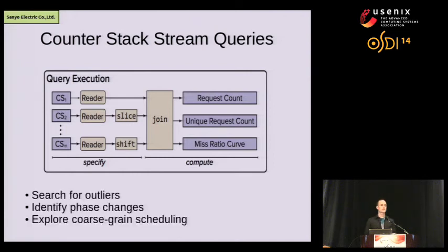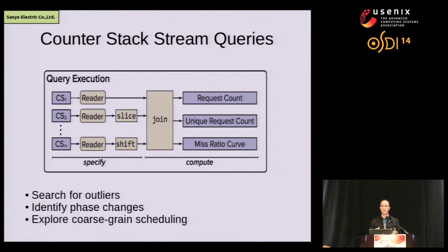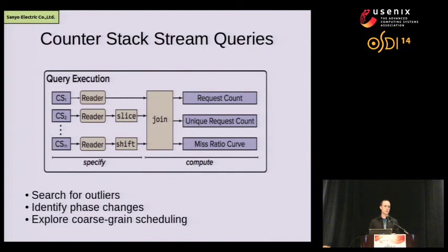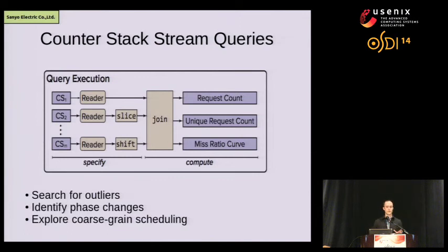This API allows some interesting analyses. We can search for outliers — periods where a workload touches an abnormally large number of unique blocks. We can look for phase changes to identify when workload behavior is shifting. We can also explore coarse-grained scheduling: for example, if a nightly backup job runs at 2 AM and trashes your cache, you could experiment with shifting it forward or backward in time to see how it affects your overall hit rate. Once a workload is converted to counter-stack, these queries execute in just seconds.